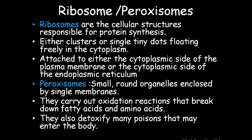Ribosomes are the cellular structures responsible for protein synthesis. They either cluster or float as single tiny dots freely in the cytosol, or are attached to the cytoplasmic side of the plasma membrane or the endoplasmic reticulum. Peroxisomes are small round organelles enclosed by a single membrane. They carry out oxidation reactions that break down fatty acids and amino acids, and also detoxify many poisons that may enter the body.